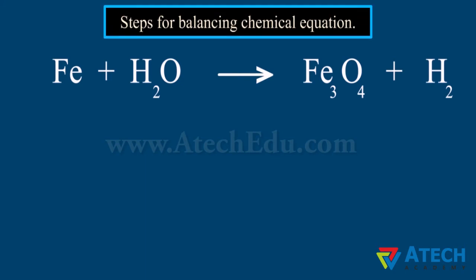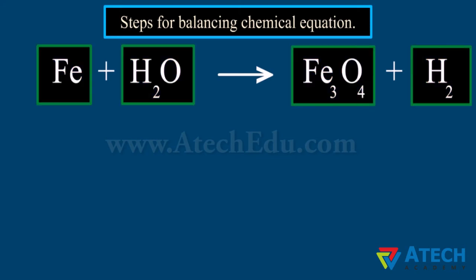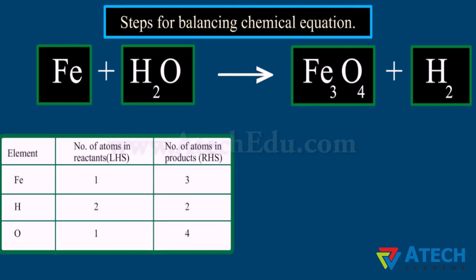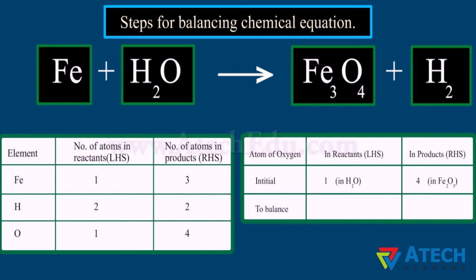Before balancing a chemical equation, the correct symbolic representation of the chemical equation shall be done. First, draw boxes around each formula, then count the number of atoms of different elements present in the unbalanced equation. We note the number of atoms of iron, hydrogen, and oxygen as reactants and products. We start balancing with the compound having the maximum number of atoms — we select Fe₃O₄.